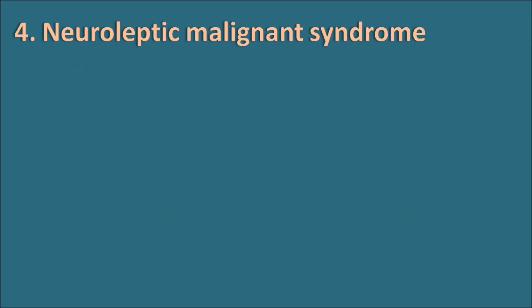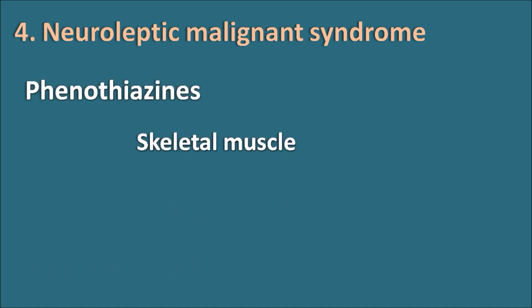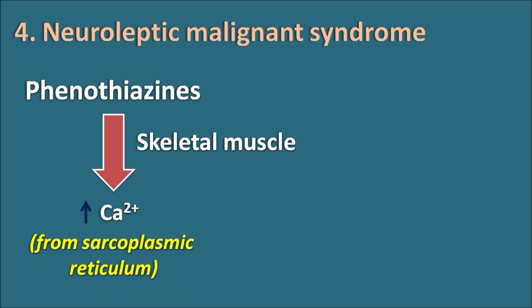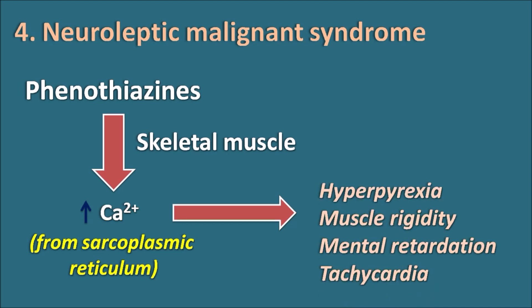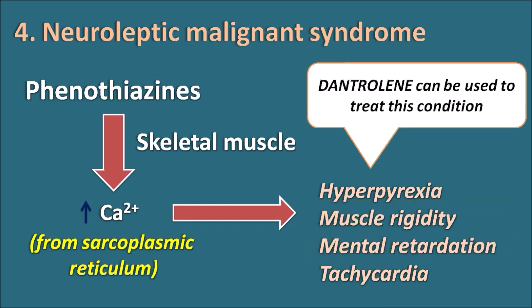The fourth type of side effect, which is fatal, is neuroleptic malignant syndrome. Phenothiazines act on skeletal muscle and increase intracellular calcium levels by causing increased release of calcium from the sarcoplasmic reticulum. These raised intracellular calcium levels result in excessive skeletal muscle contraction, producing symptoms like hyperpyrexia, muscle rigidity, mental status changes, and tachycardia — collectively called neuroleptic malignant syndrome. Dantrolene can be used to treat this condition, as it blocks the release of calcium from the sarcoplasmic reticulum.